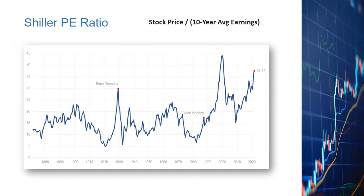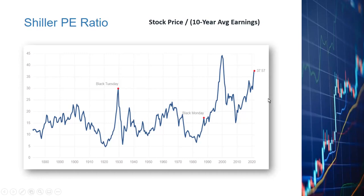Let's look at the very important Shiller PE ratio, defined as the stock price divided by the 10-year average earnings of all S&P 500 companies. The higher the ratio, the more likely we are to face a market correction. As of today, we're at 37.57 — worse than before the 2020 crash and definitely worse than before the 1929 crash. The only point in history that was worse than today was right before the 2000 dot-com crash. That means the market is very inflated. Although this ratio has been flashing warning signs for the last two or three years, it's still important to keep it in mind.